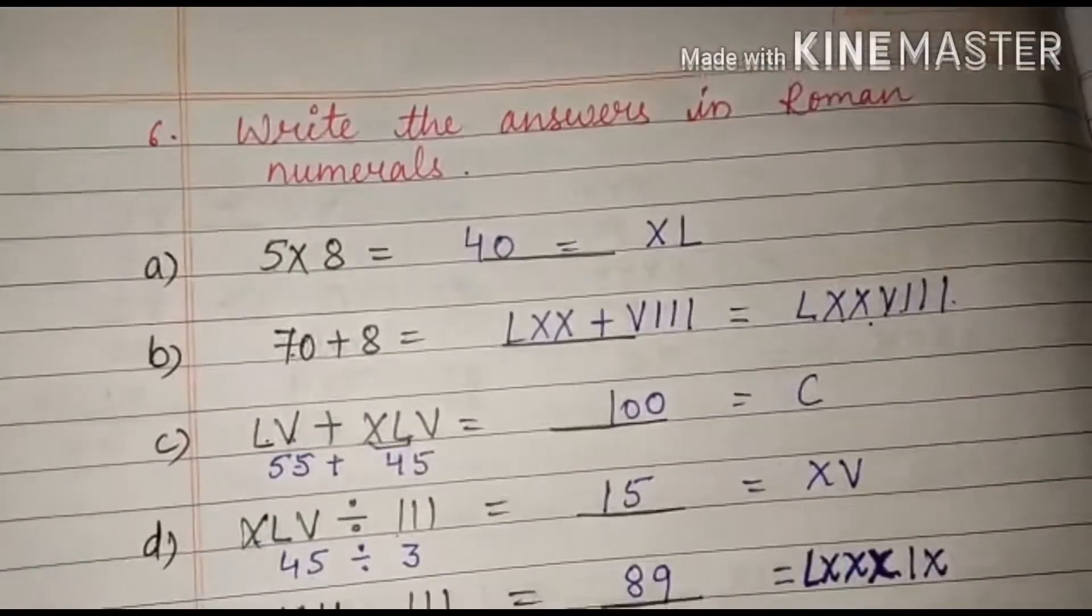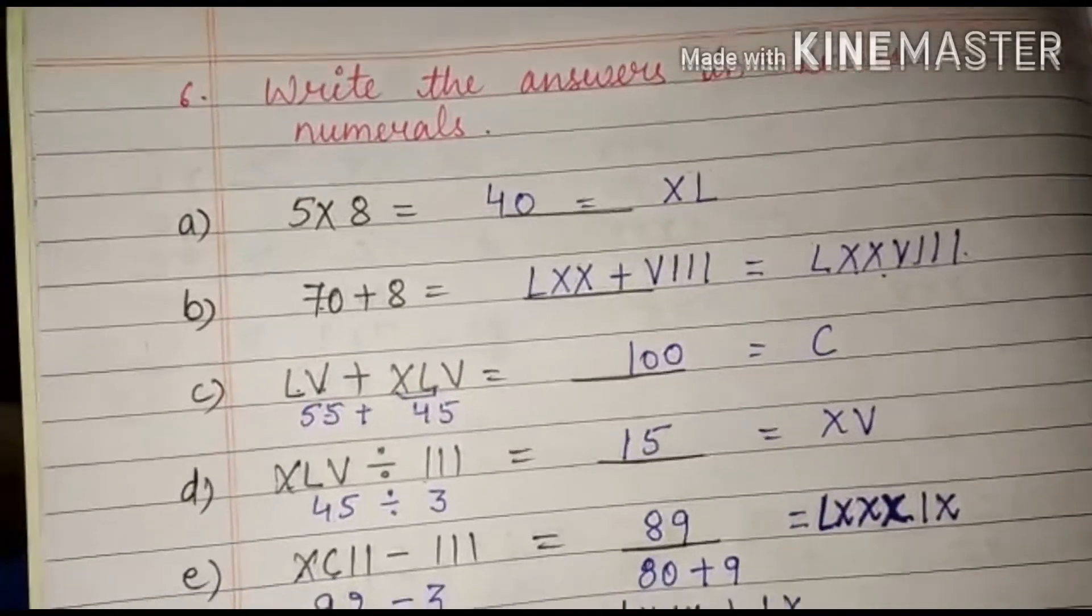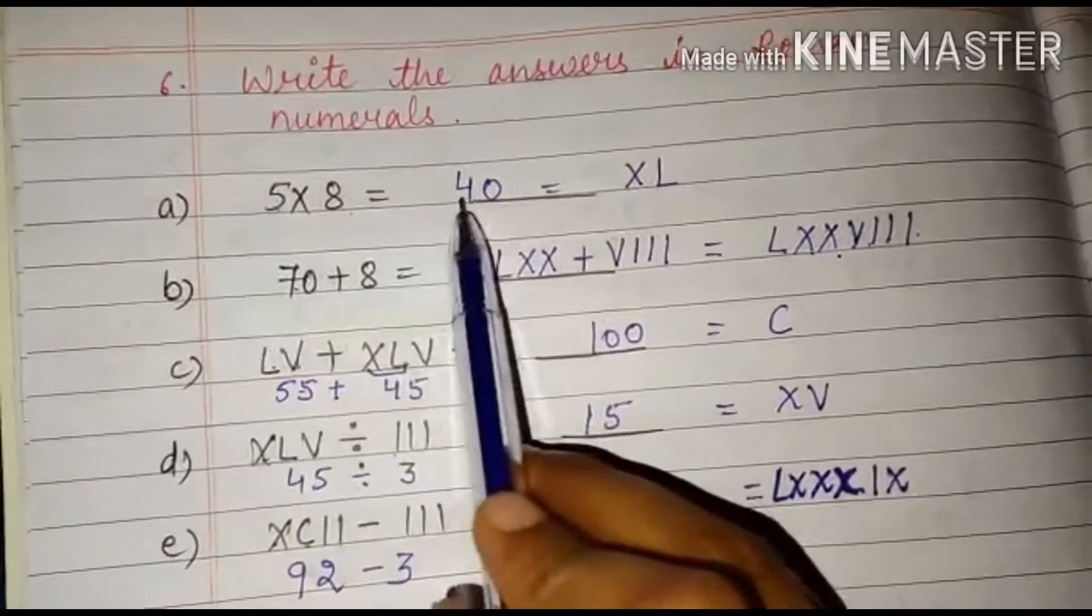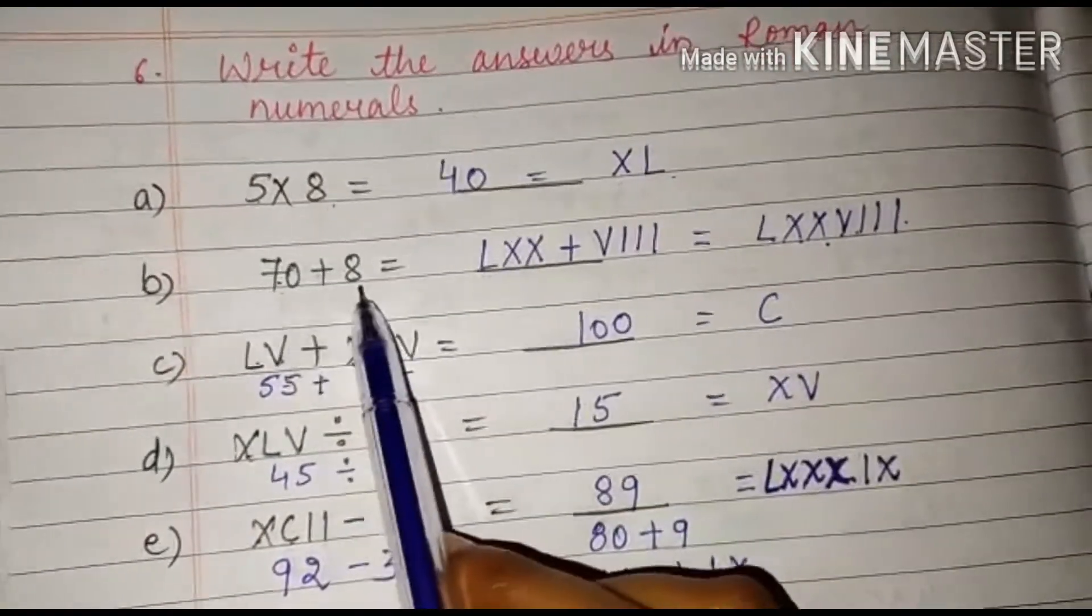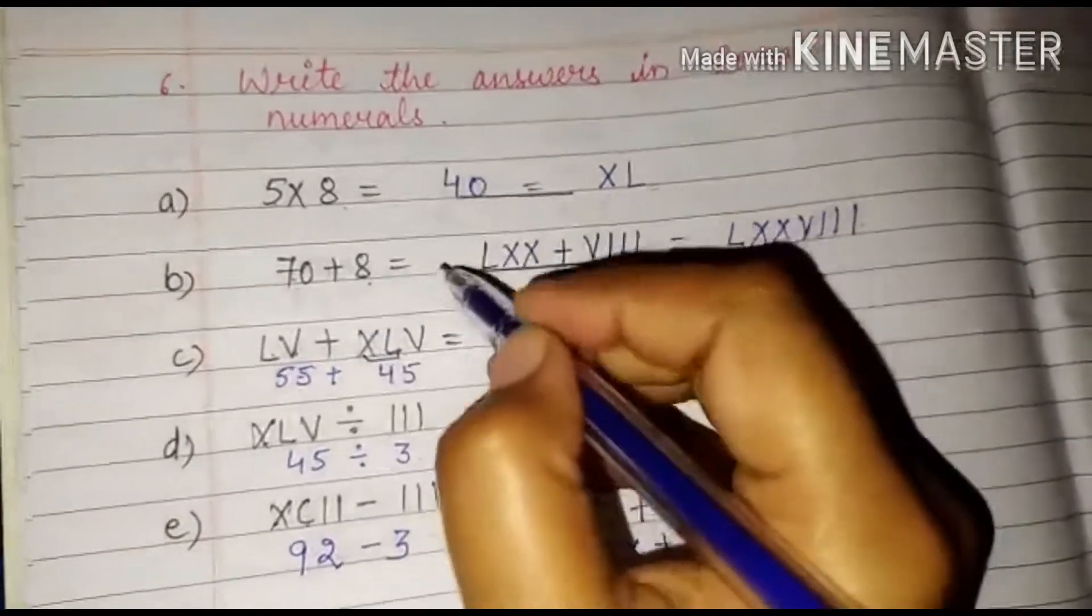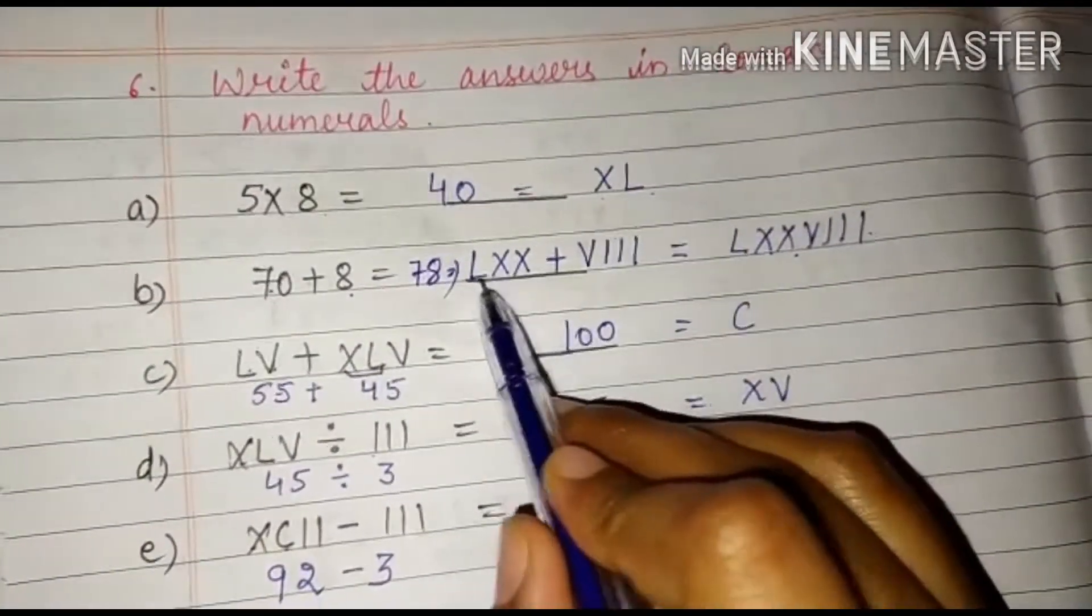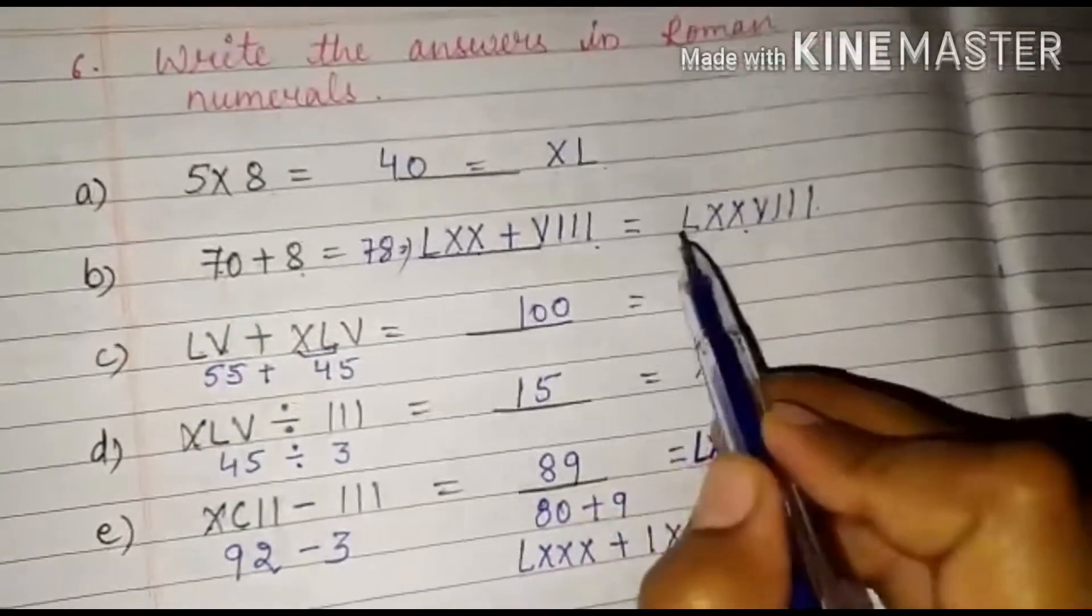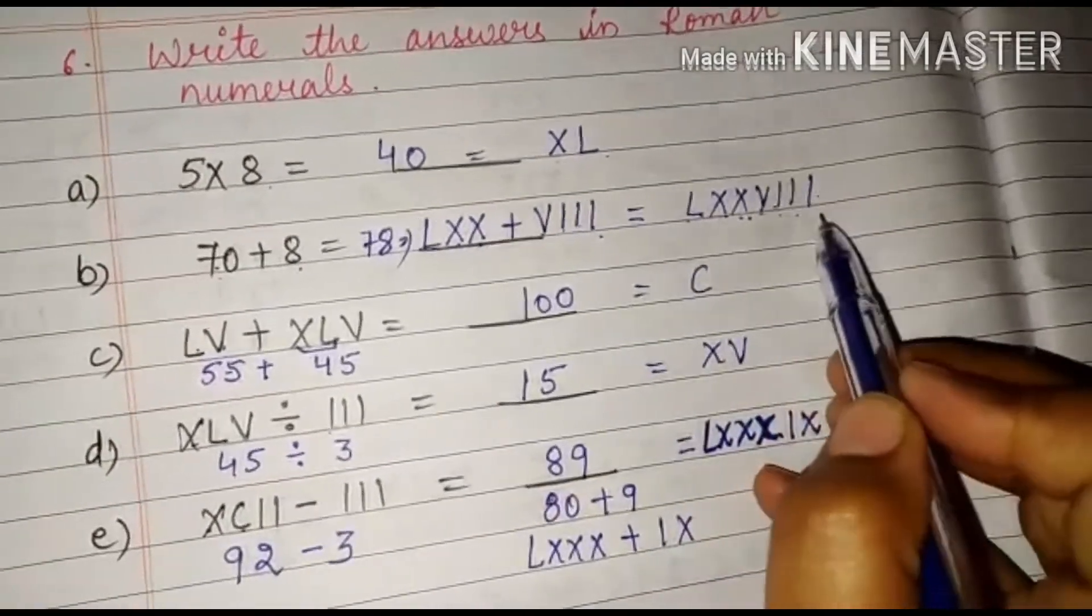So our next question is write the answers in Roman numerals. That means first we have to solve the question and then we will write in Roman numerals. So 5 multiplied by 8 is equal to 40. 40 will be written as XL. 70 plus 8 is 78. So how we can write 78? 70 is written as LXX and 8 is written as VIII. So 78 will be LXXVIII.